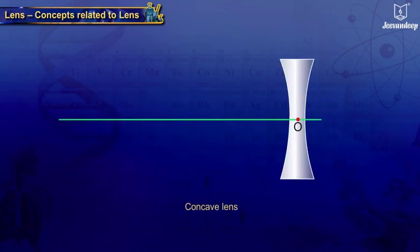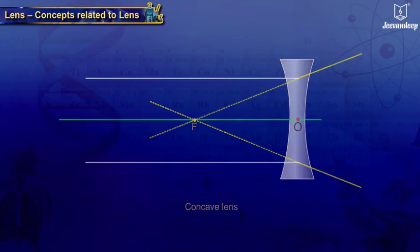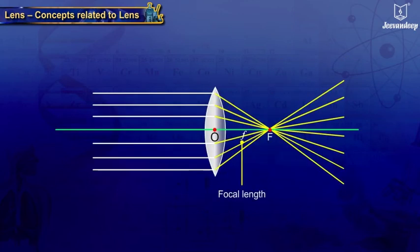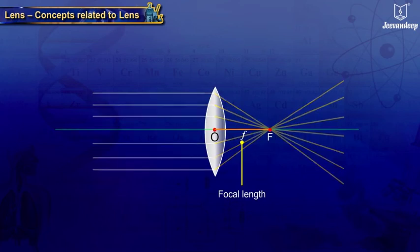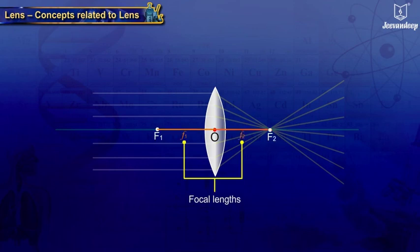In a concave lens, rays of light parallel to the principal axis appear to diverge from the focus. The focal length, represented by small f, is the distance between the principal focus and the optical center of the lens. A lens has two focal lengths, F1 and F2.